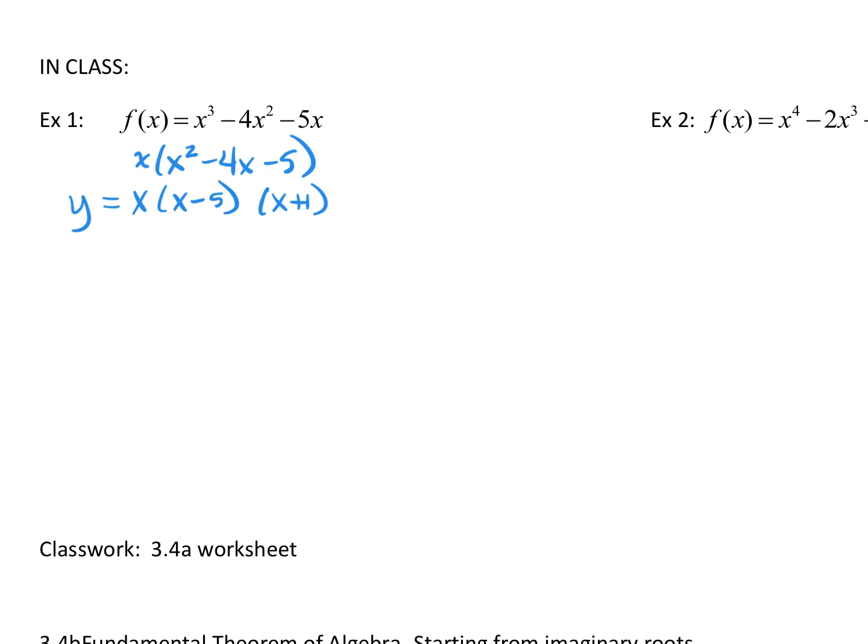And then from here, this is all we've been doing, right? x will equal 0. This will give me x equals a positive 5, and this gives me x equals negative 1. So, according to the fundamental theorem of algebra, when I look at this graph, it's going to hit at 0, 1, and a 5, right?